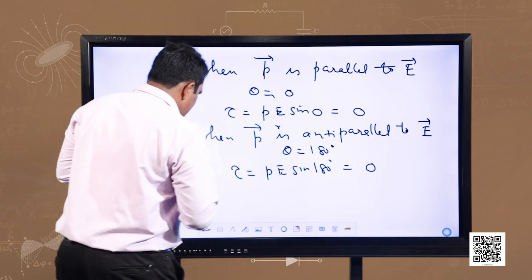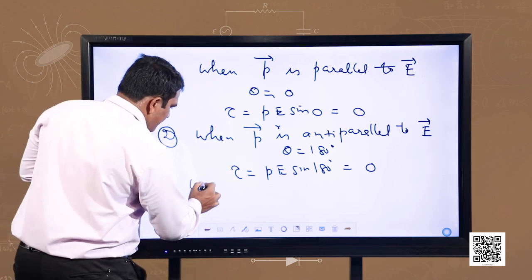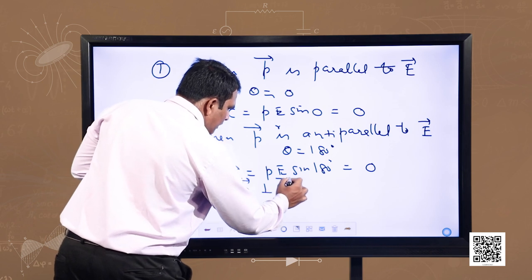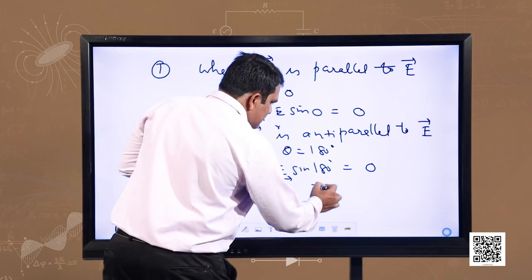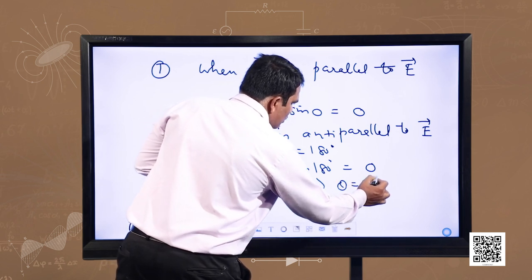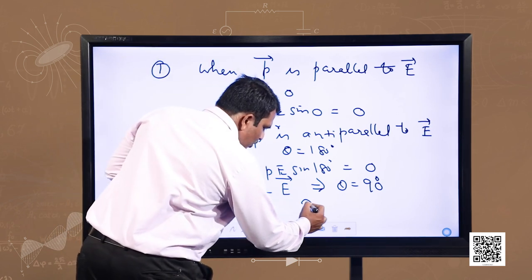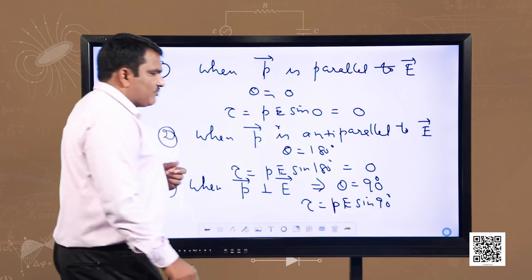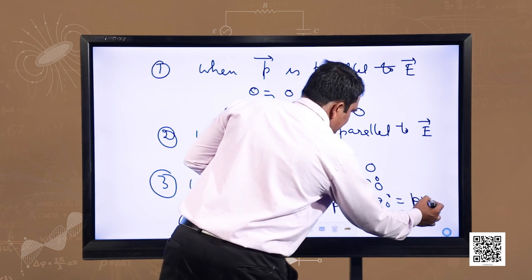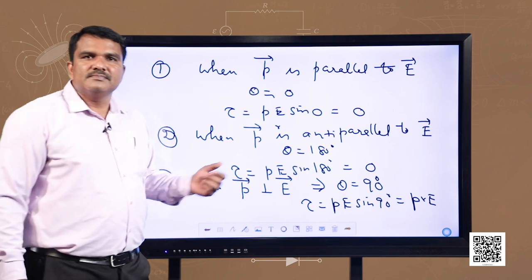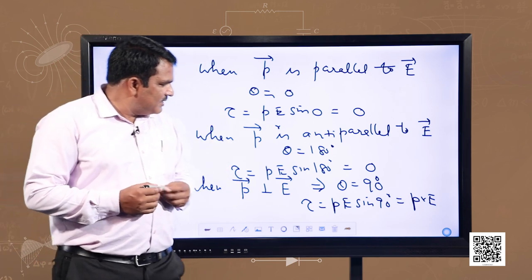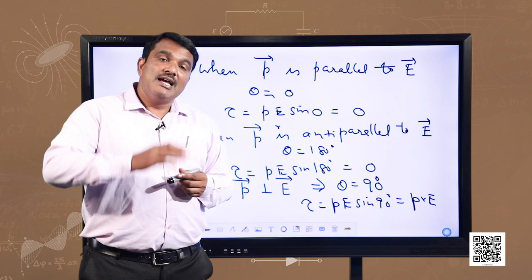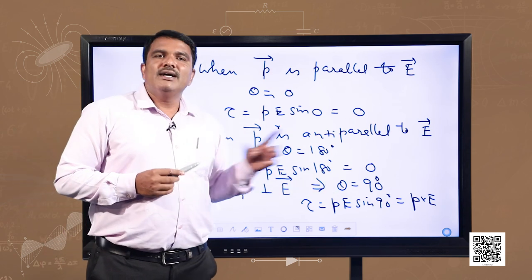Now let us see the third condition: when the dipole is placed perpendicular to the electric field, P is perpendicular to E, meaning theta is 90 degrees. The torque will be PE·sin90°, and since sin90° equals 1, we get torque equals PE, which is the maximum value. Hence, an electric dipole experiences maximum torque when it is placed perpendicular to the electric field.